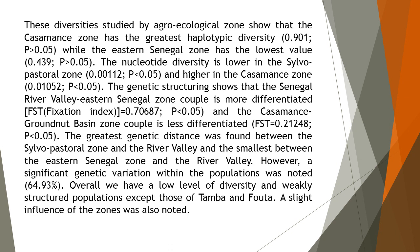The genetic structuring shows that the Senegal River Valley–Eastern Senegal zone couple is more differentiated, with an FST fixation index of 0.70687 (p < 0.05), and the Casamance–groundnut basin zone couple is less differentiated, with an FST of 0.21248 (p < 0.05).